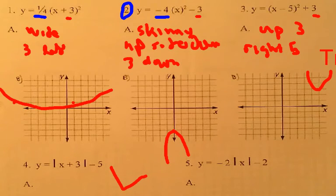So, this one is five down and three to the left. This one's a skinny upside down V.